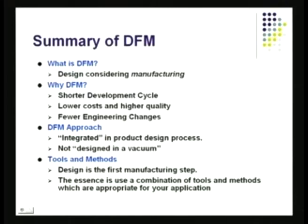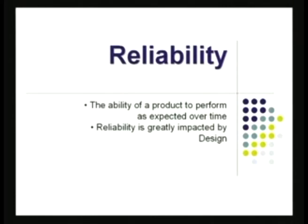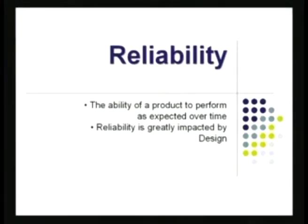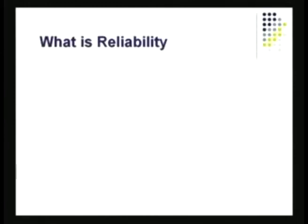FMEA is a very important tool and we will be using it as we go into this. References are provided for further study. Moving on now to the topic of reliability: reliability is basically the ability of a product or a service to perform as expected over a period of time. This is not quality exactly when you unpack the item — it is the performance of the product over the useful life of the product, and it is greatly impacted by design.